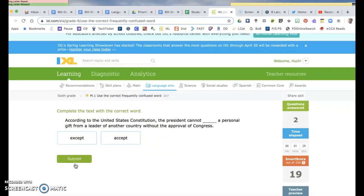According to the United States Constitution, the president cannot accept a personal gift from a leader from another country without the approval of Congress. This means like an exception, and this means like to take, so he can't take.